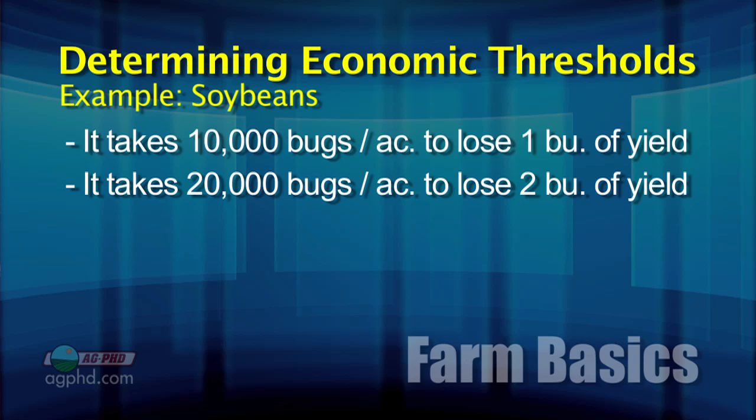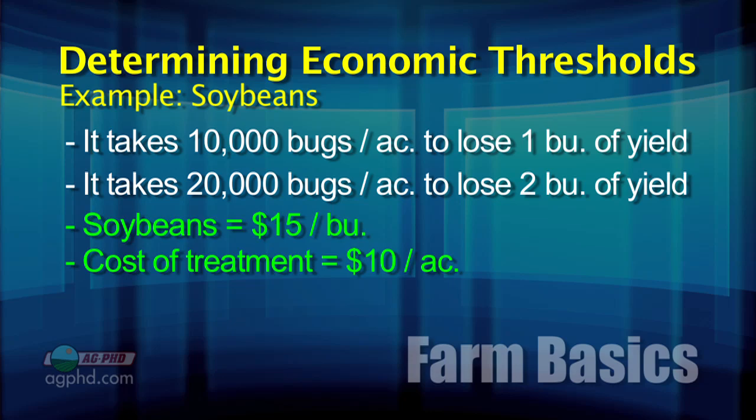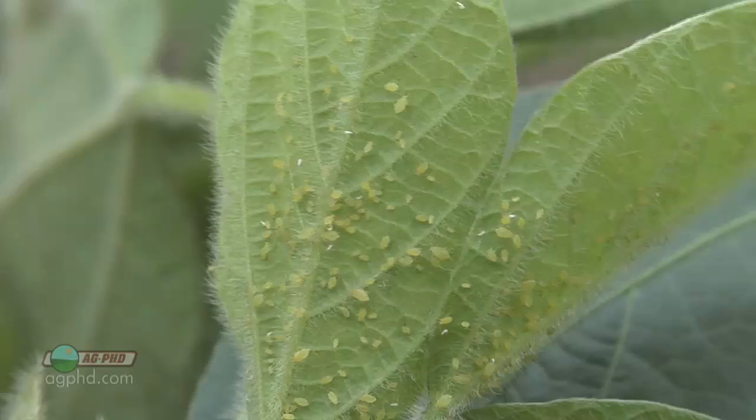What we are looking for is if I can gain $15 at a $10 cost, that's pretty good. Basically, my economic threshold is that $10 cost, and if that happens to be 10,000 bugs out there, then that's what I'm going for.